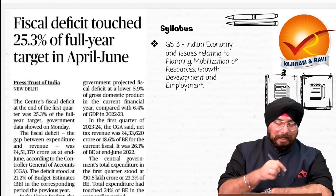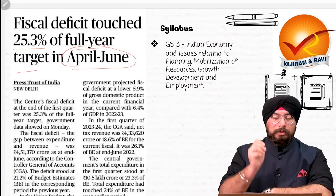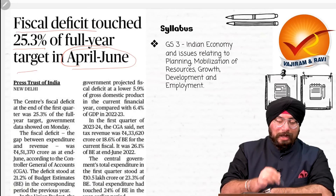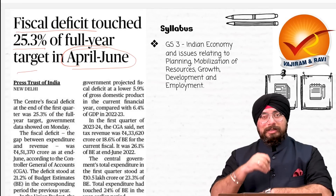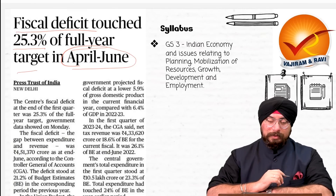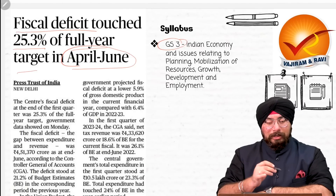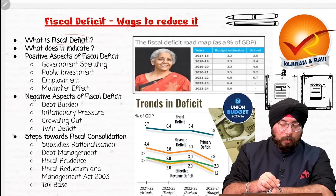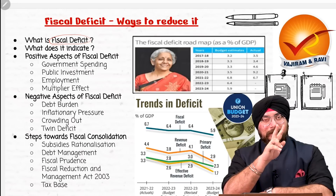Fiscal deficit has recently touched 25.3% of the full year target in April to June. In relation to that, let us take a look at fiscal deficit in totality — what is the concept, how it is problematic for our country, and what measures government has taken to reduce it. This is important for our GS paper 3 Indian economy portion. The first question: what is fiscal deficit? The government budget is divided into two parts — expenditure and revenue.